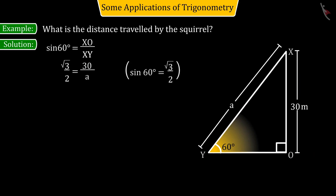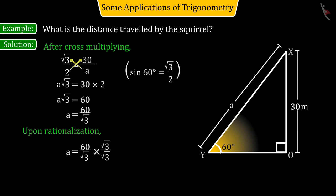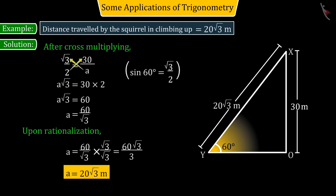When we solve, we get the value of A as 20 square root 3. So, we can say that the distance covered by the squirrel in climbing up will be 20 square root 3 meters.